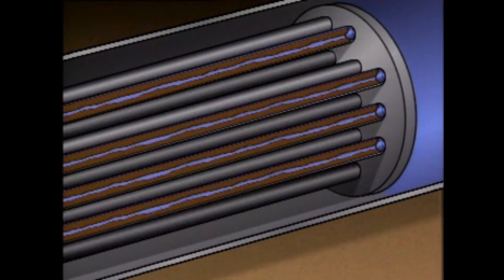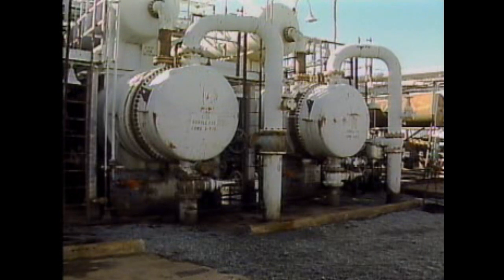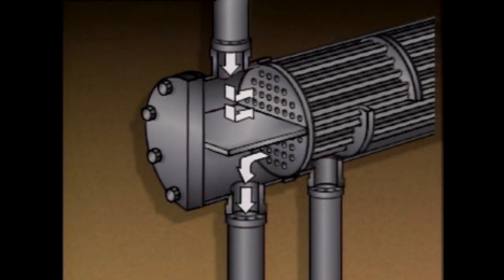One way that heat exchangers can be cleaned is by using chemicals. When this is done, a chemical solution is passed through the heat exchanger to dissolve the fouling on the walls of the tubes. Fouling on tube walls can also be removed by scraping or by spraying with high-pressure water or steam. However, these methods require the heat exchanger to be shut down and taken apart. In some heat exchangers, cleaning can be accomplished using a technique called backwashing, which is the reversing of flow through the heat exchanger. This technique is effective in temporarily dislodging materials from the ends of the tubes and the tube sheets.